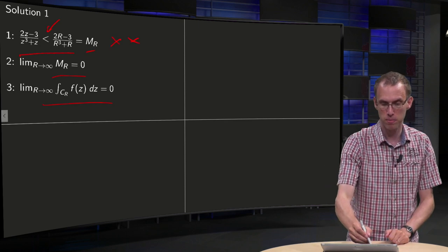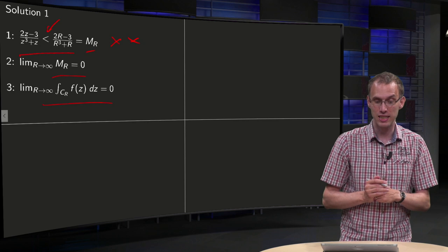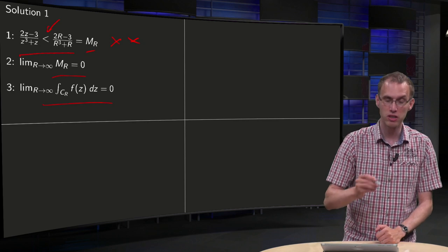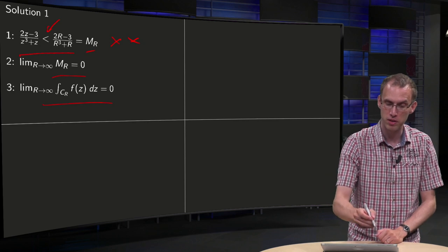You only can compare moduli of complex numbers. So this step is a mess. Second step is actually correct, so you need some steps to show that maybe, but it is correct.